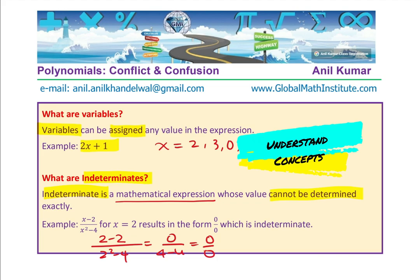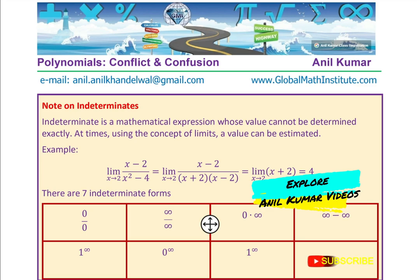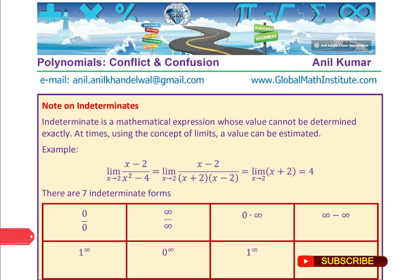So there is nothing called indeterminate variables. Let's move ahead. Let's explore more about what indeterminates could be. We saw 0 by 0, just a common indeterminate which 99% students know and they use it, especially in rational functions. We have just seen that indeterminate is a mathematical expression whose value cannot be determined.